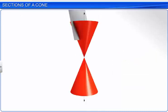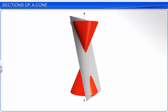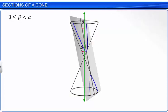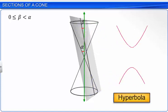If the plane intersects the cone such that angle beta is less than angle alpha and greater than or equal to 0, the plane cuts across both nappes of the cone and the resulting conic section is a hyperbola.